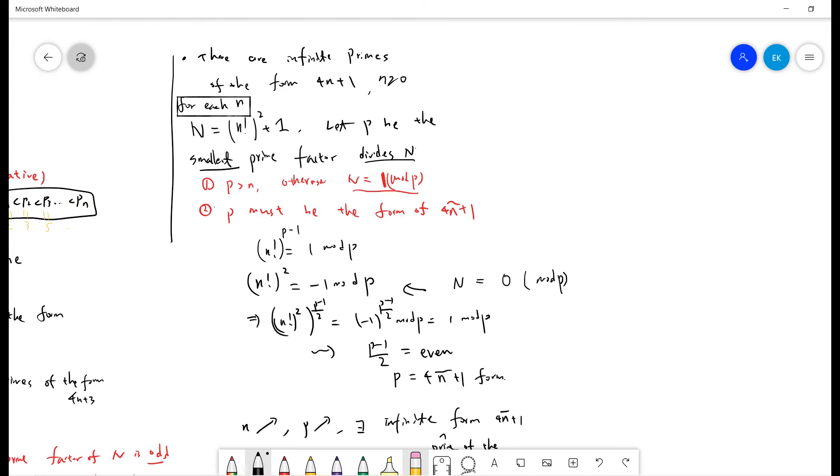So n factorial squared is minus 1 mod p. So n factorial squared times p minus 1 divided by 2 will be minus 1 to the p minus 1 divided by 2 mod p. But by Fermat's Little Theorem it's 1 mod p. So we get minus 1 to the p minus 1 divided by 2 should be 1. So p minus 1 divided by 2 must be even. So p is a 4n tilde plus 1 form.